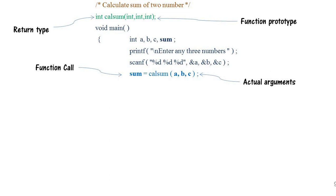Let's see what actual arguments and formal arguments are. Whenever you call a particular function and pass variables at that time, those are called actual arguments. Once you receive the calculation result, you simply print it out.